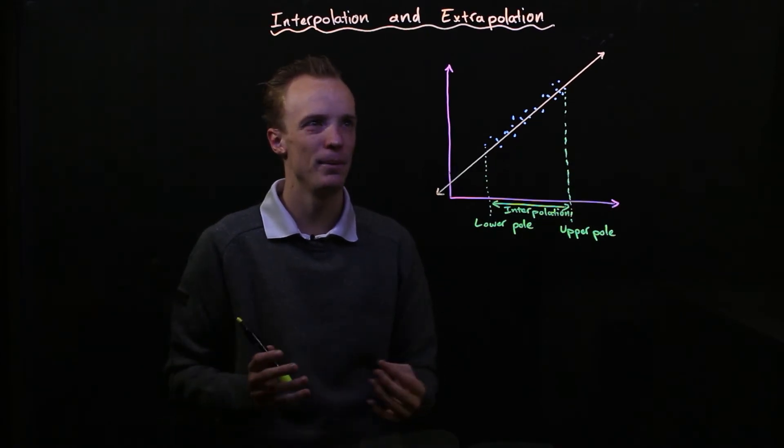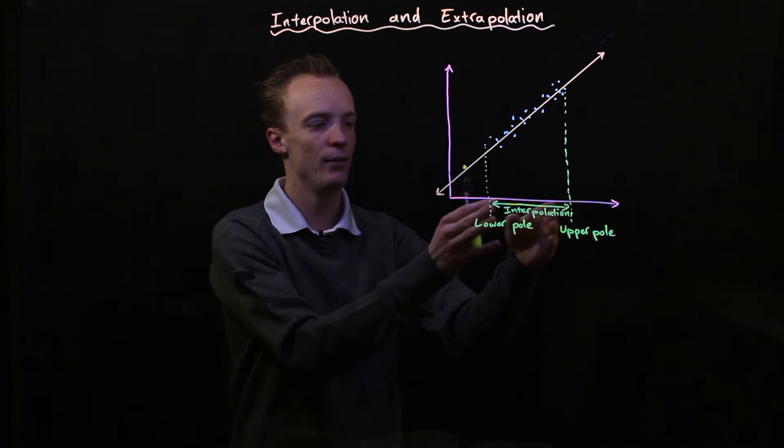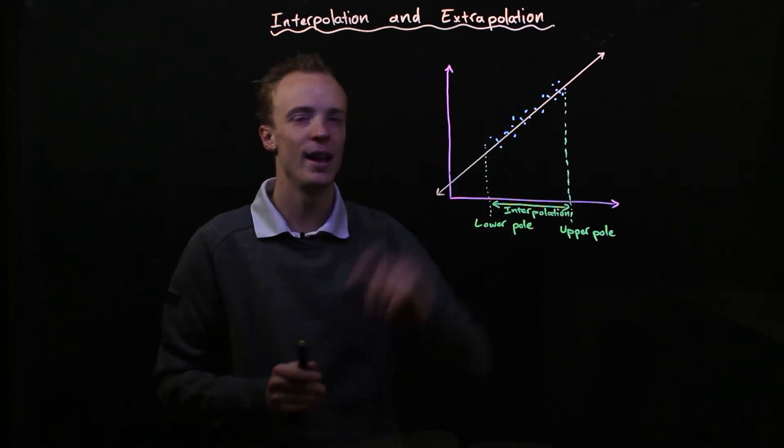And if we were to make predictions on our data based on our line of best fit outside of these two poles we call it extrapolation.